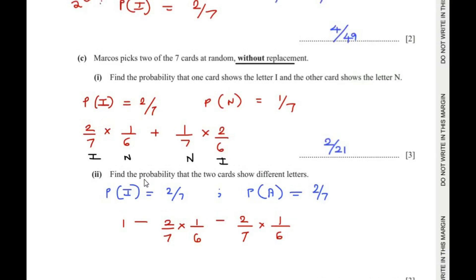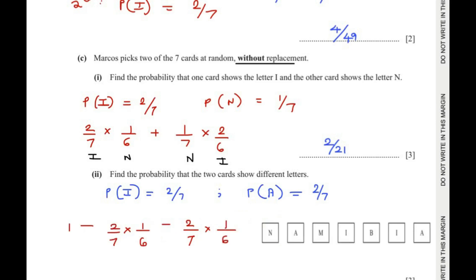The second sub-question asks: find the probability that the two cards show different letters. Let us see which letters repeat in the 7 cards. Letter I repeats twice and letter A also repeats twice. We will take the total probability of 1 and subtract the probability of getting repeating letters, to find the probability of two different letters.